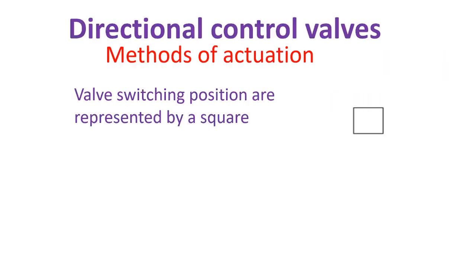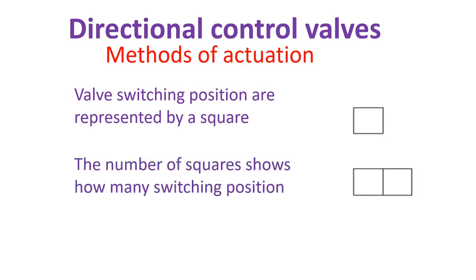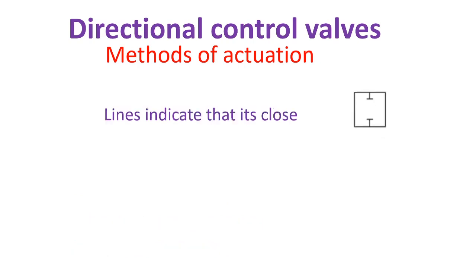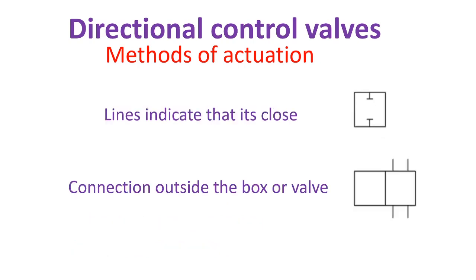Now let's get started on how to read directional control valves. Valve switching positions are represented by a square. The number of squares shows how many switching positions. Lines indicate flow path, arrows indicate direction, lines indicate that it is closed, and connections appear outside the box or valve.